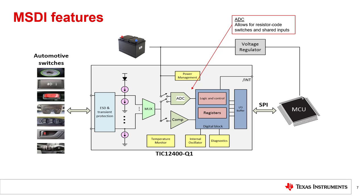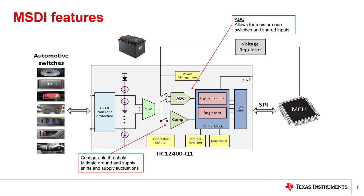Multiple digital switches can be combined to one MSDI input, and the ADC can provide the information on the status of each switch, which reduces the cabling and number of connections in the system. The threshold for the ADC can be set to one of the 1023 ADC codes, while the comparator seen in all devices offers four threshold levels: 2, 2.7, 3, and 4 volts. These comparator thresholds provide the capability for the system to mitigate ground shift, supply shift, and supply fluctuations.